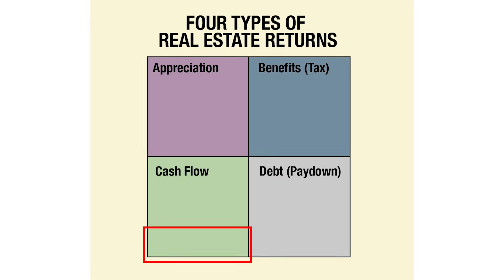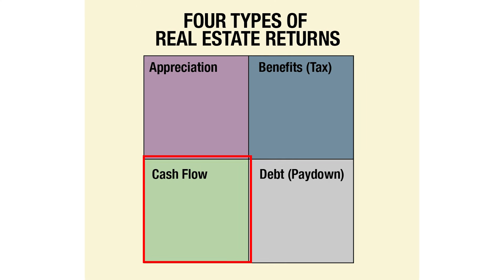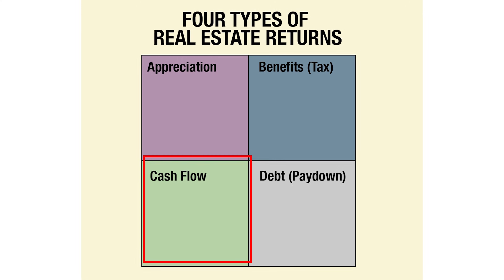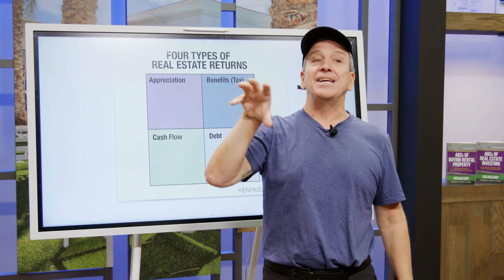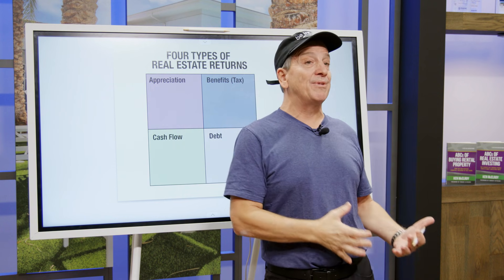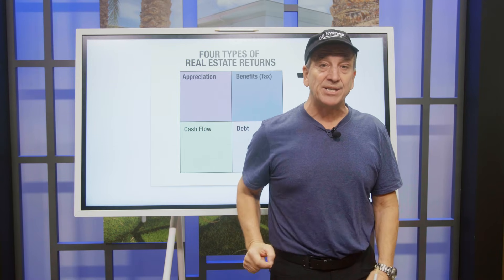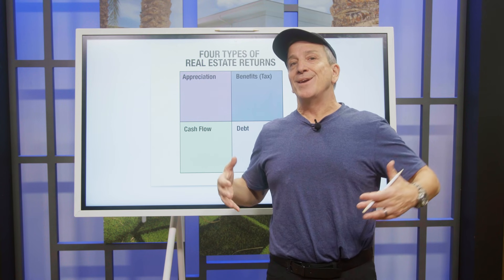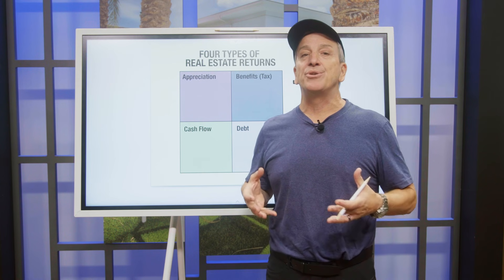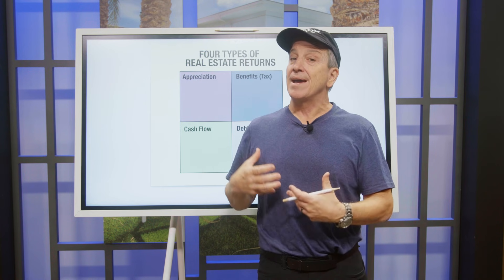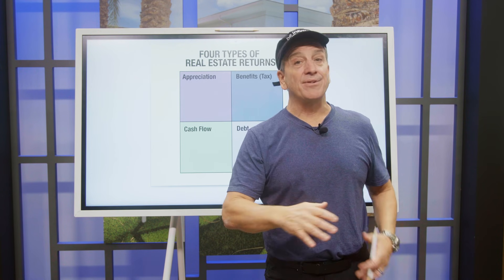The third type of return in the real estate investing quadrant is cash flow. Cash flow has three components: income, expenses, and debt. There are definitely ways to increase your income, ways to reduce your expenses, and ways to manage your debt — all to generate more cash flow. Cash flow is exactly what you need if you're going to raise capital for any kind of investor for any deal. Don't forget to watch my dedicated cash flow video where we go into a lot more detail.